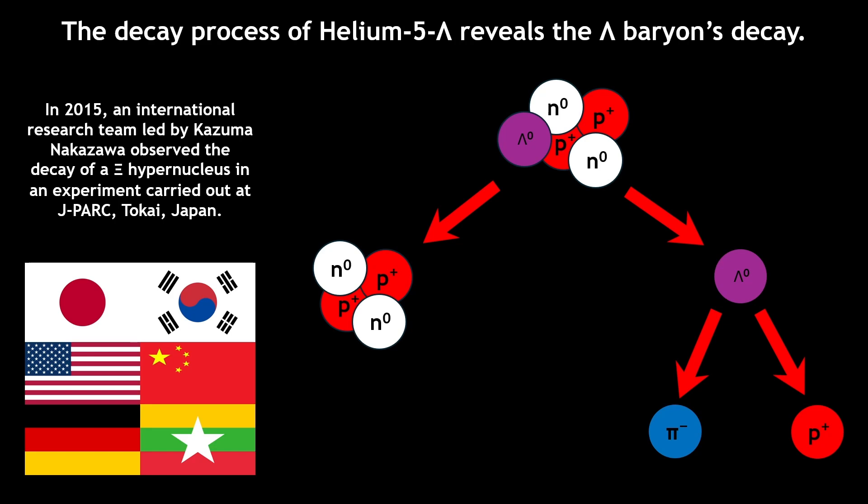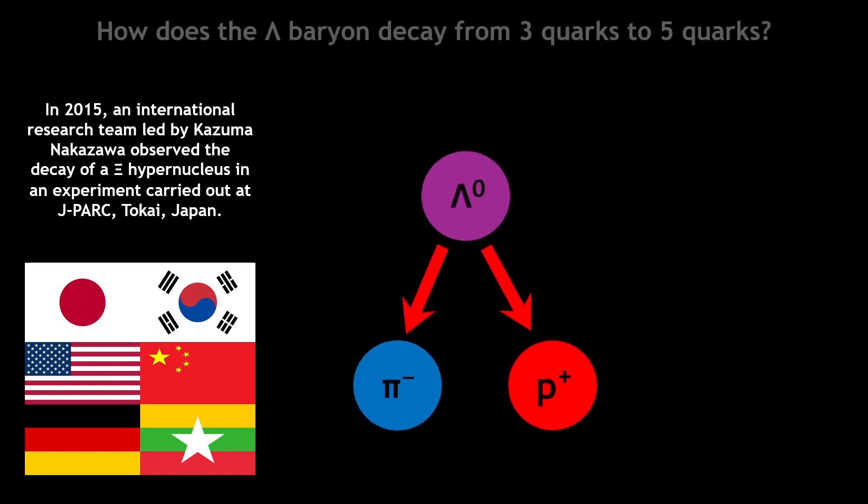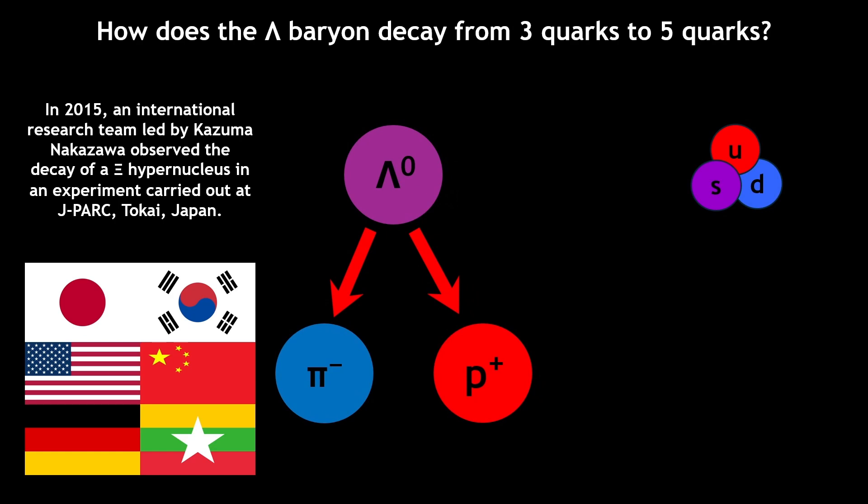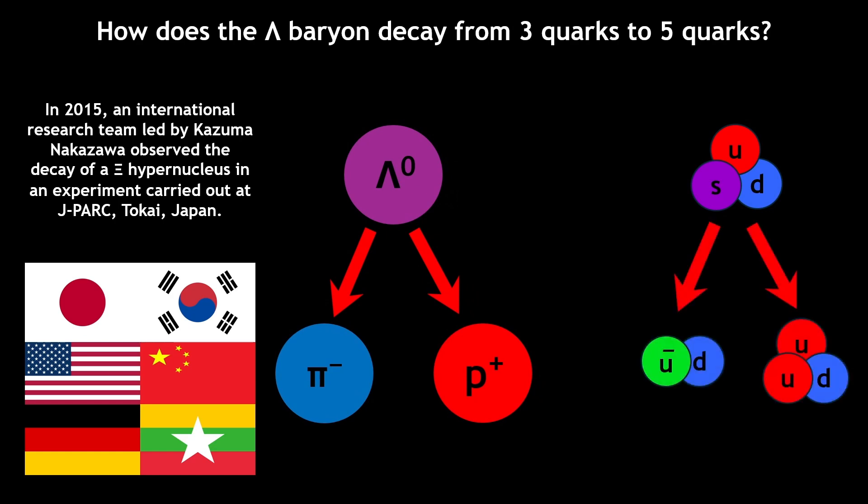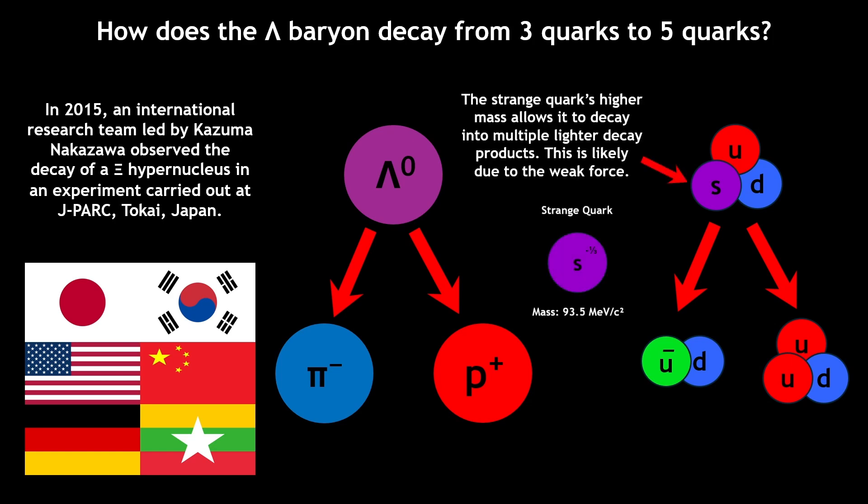But this seems to create particles out of nowhere, since the lambda baryon, which is composed of three quarks, becomes a proton, composed of three quarks, and a pion, composed of two quarks. This can be explained because of the strange quark's considerably higher mass, which can lead to multiple decay products that include quarks with a lower mass. This decay is likely via the weak force, which is responsible for many interactions between subatomic particles.